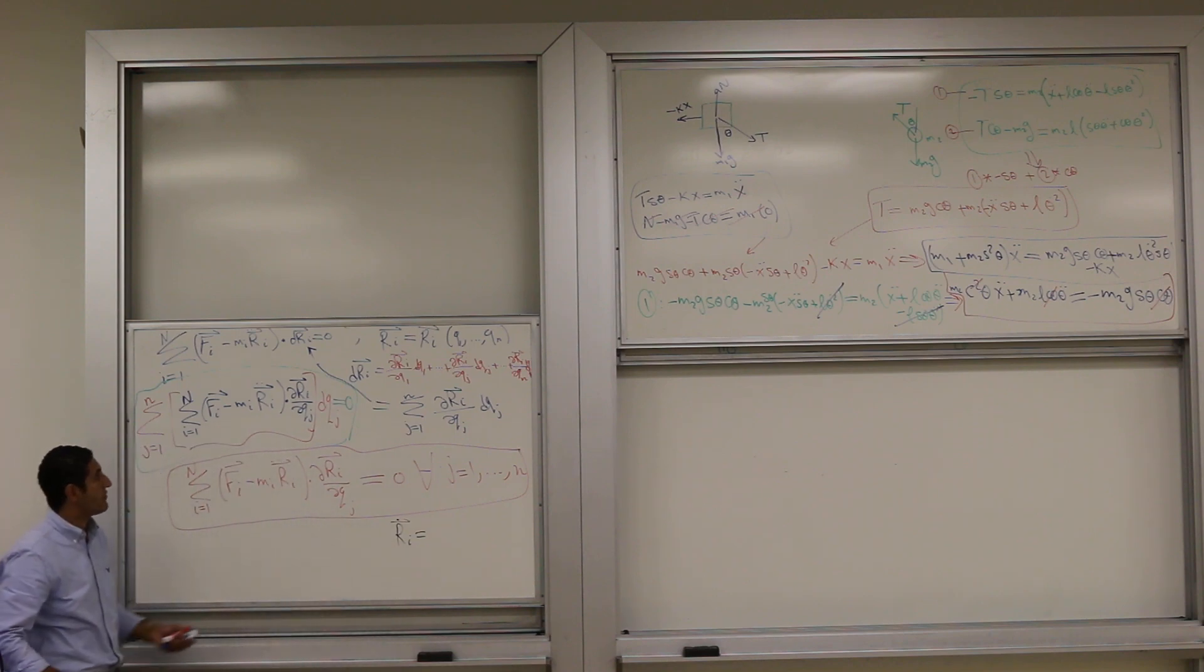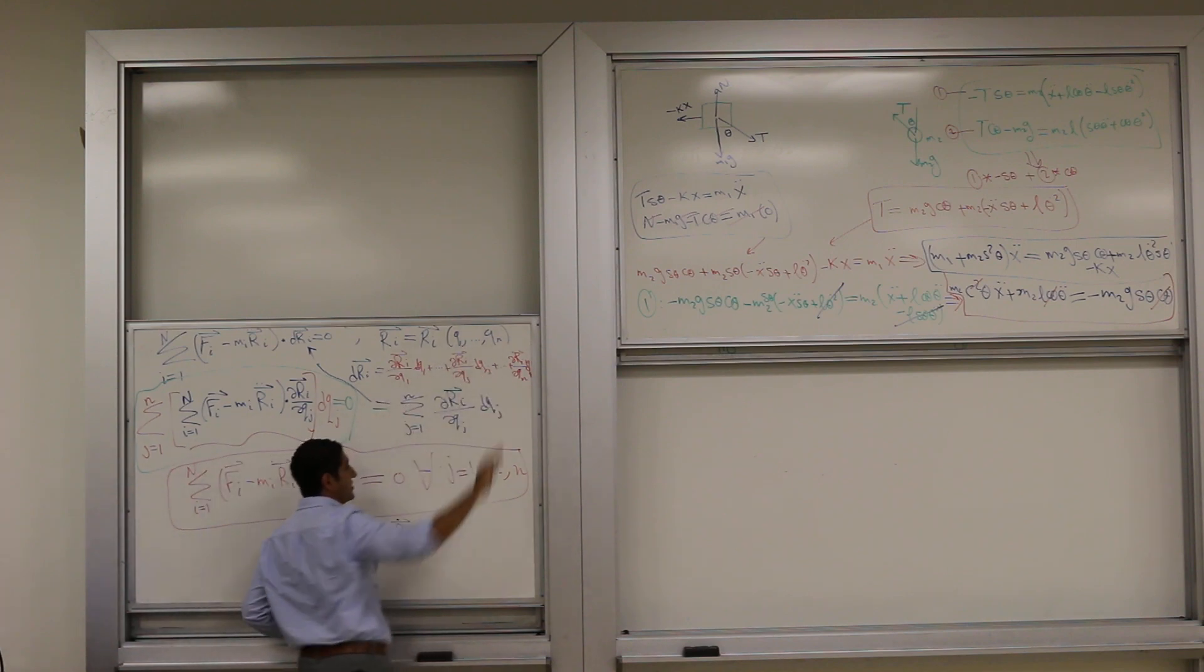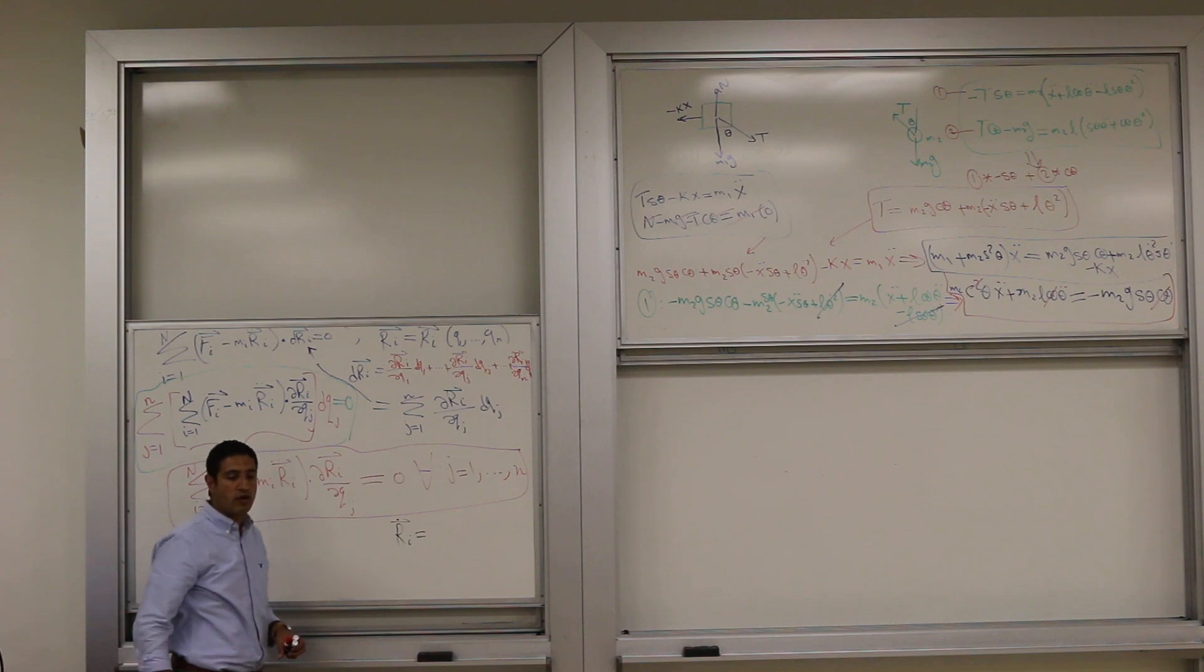If your position comes from some q, x and a, how are you going to get your velocity? Come on, guys.